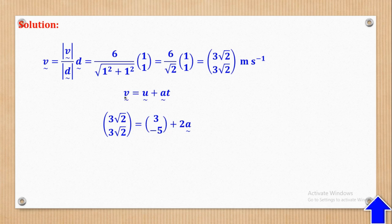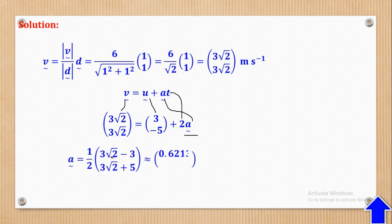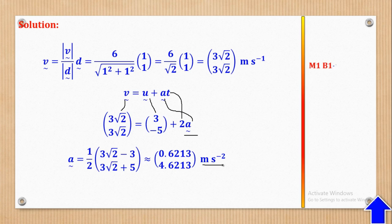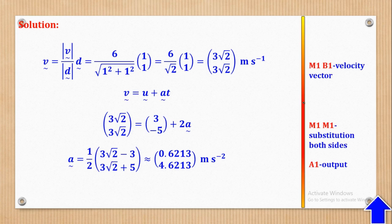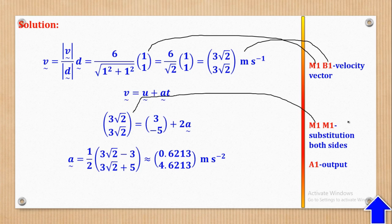Next, using the first equation of motion V = U + AT, I substitute for V (which we just found), U = 3i − 5j (given), and T = 2 seconds. Acceleration is the only unknown, so simplifying gives acceleration = 0.6213i + 4.6213j meters per second squared. For marks: B1 for the velocity vector, M1 for substitution on the left-hand side, M1 for substitution on the right-hand side, and A1 for the output — giving 5 marks in total.